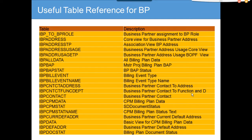We are going to cover the useful table reference for business partners. How can you live within an SAP environment without a table? SE16 is the transaction code where you check tables. I have jotted down most of the tables available in business partners — probably 40%, out of which most are important and some are very important. I'll go through the details of the most important ones.